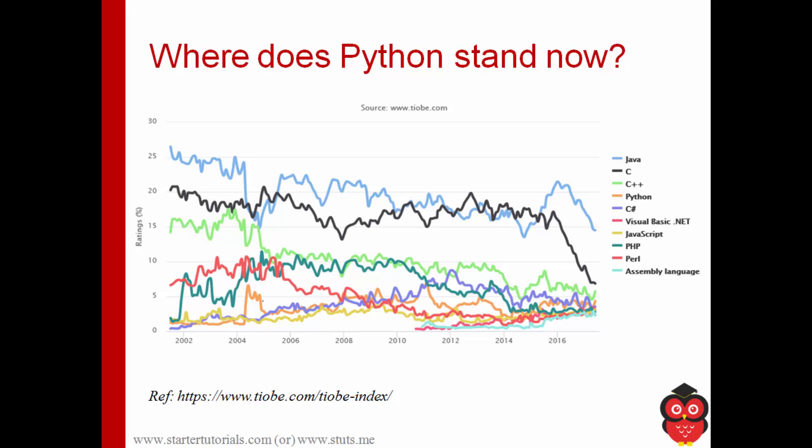And rather than numbers here is a graph. So here the orange line represents Python.